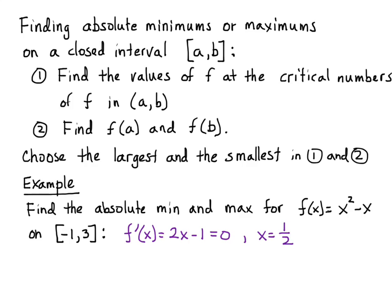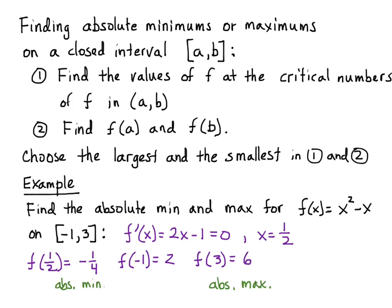We calculate the derivative and set it to zero, finding that the derivative equals zero when x equals one half. That's the only place between negative 1 and 3 that it's going to be zero. If we evaluate f at one half, we get negative one fourth. f at negative 1 equals 2, and f at 3 equals 6. We inspect and say 6 is the biggest number — that's the absolute maximum. Negative one fourth is the smallest number — that's the absolute minimum. It's a fairly straightforward procedure. Since we have a nice polynomial, it's differentiable everywhere, and we have essentially three points to evaluate.